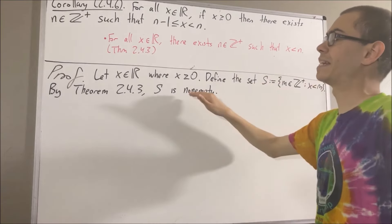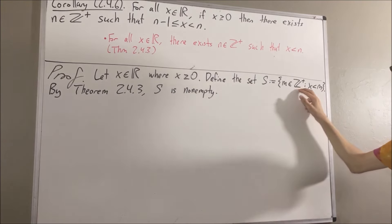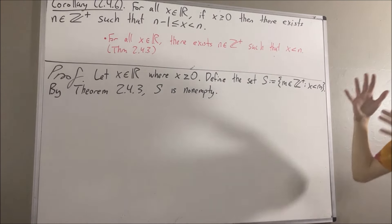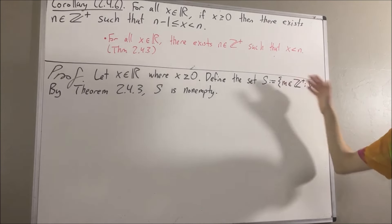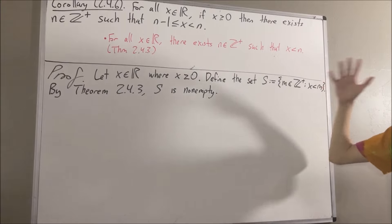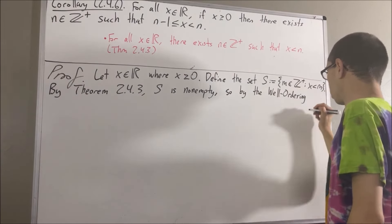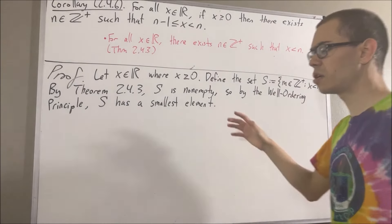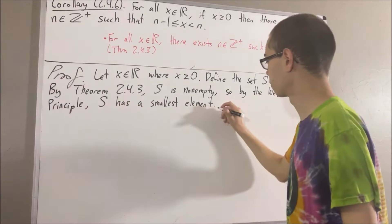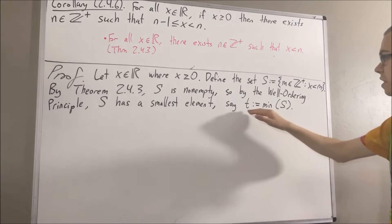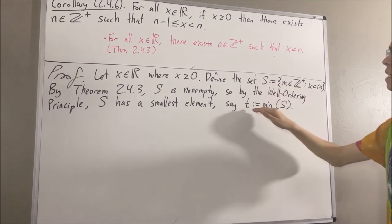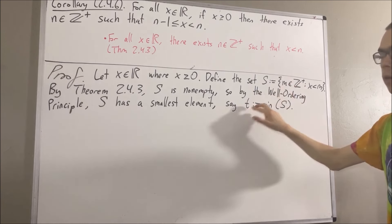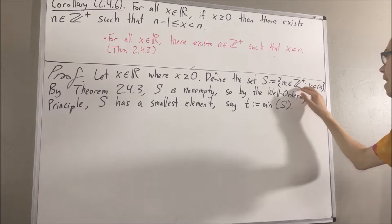So S is a non-empty subset of the positive integers. Every non-empty subset of the positive integers has a smallest element — this is called the well-ordering principle. So S has a smallest element; I'll say that T is the smallest element of S. Since T is the smallest element of S, T is an element of S, which means, taking n to be T, we have that T is a positive integer and x is less than T.